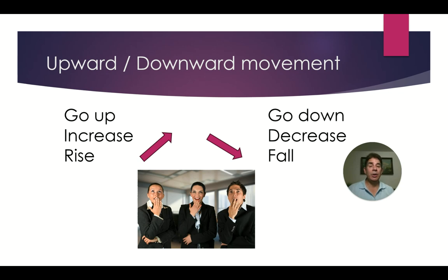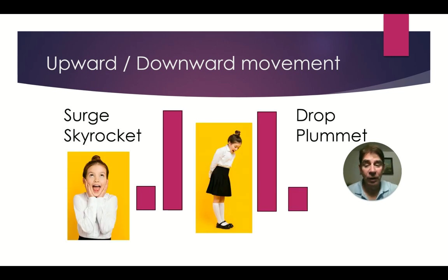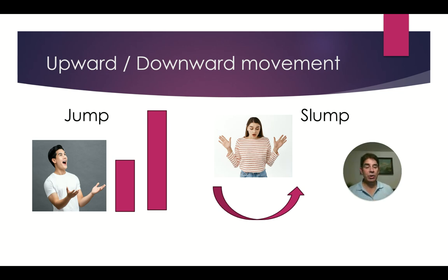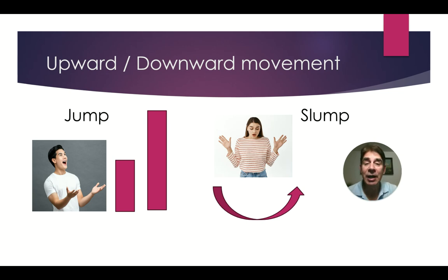In general, we can use simple upward or downward movement words such as go up, go down, increase, decrease, rise, or fall. To show a sharper rise or fall, we can use words like surge or skyrocket for going up, and drop or plummet for going down. If you want to show a quick or abrupt change upward, you can say jump. Or if we want to show a gradual change which goes down and comes back up, we can say slump.